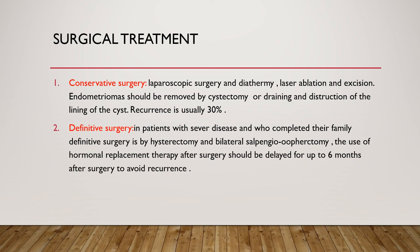The second main option is surgical treatment, divided into conservative or definitive (radical) surgery. Conservative surgery is done by laparoscopy and includes diathermy ablation, laser ablation, or resection of lesions found in the pelvis, including resection of endometriomas. For endometriomas, we should do cystectomy — removing the endometrioma alone rather than oophorectomy. If cystectomy is not possible, we should drain the cyst and destroy its lining by diathermy.